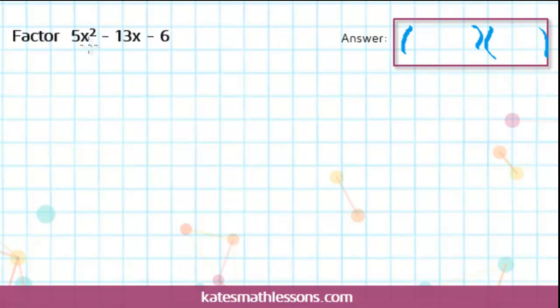If you're familiar with doing problems with just an x squared, you would do an x and an x. So in order to change it to get it to come out to 5x squared, we need to do a 5x and an x.